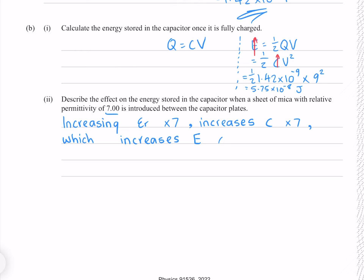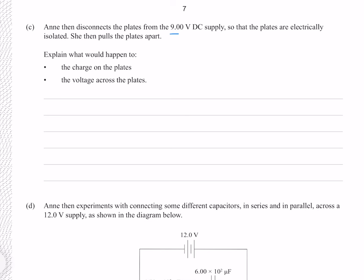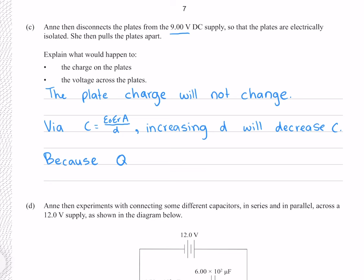Ann then disconnects the plates from the 9 volt supply so they are electrically isolated, and pulls the plates apart. Because the plates are electrically isolated, the charge on the plates will not change. Via the capacitance equation, increasing the separation d will decrease C. Since Q equals CV and Q is constant, the voltage will increase.